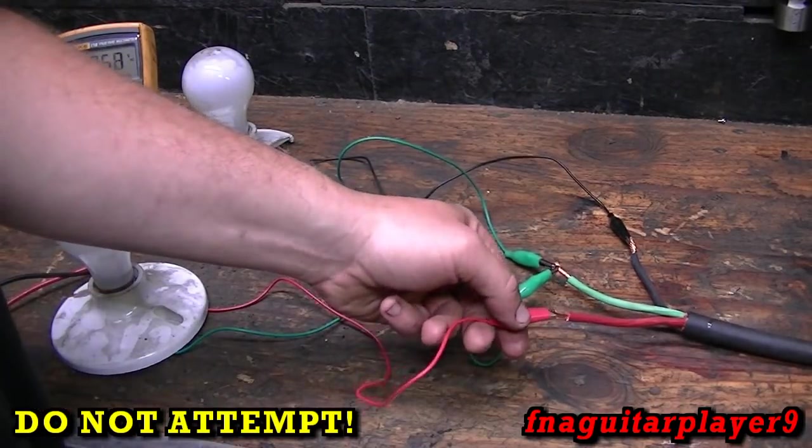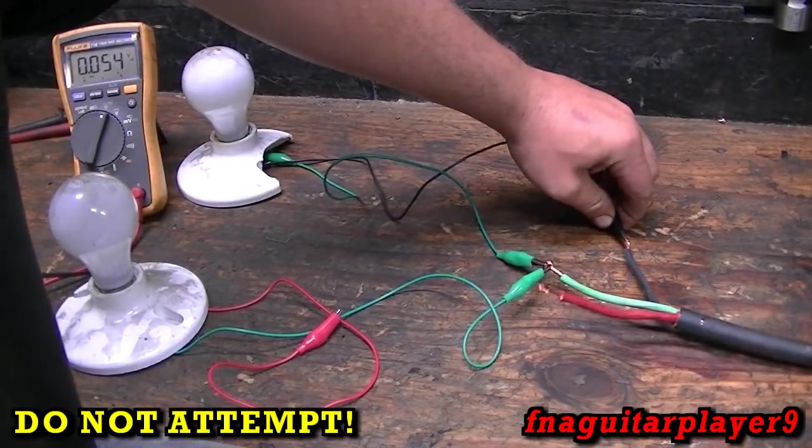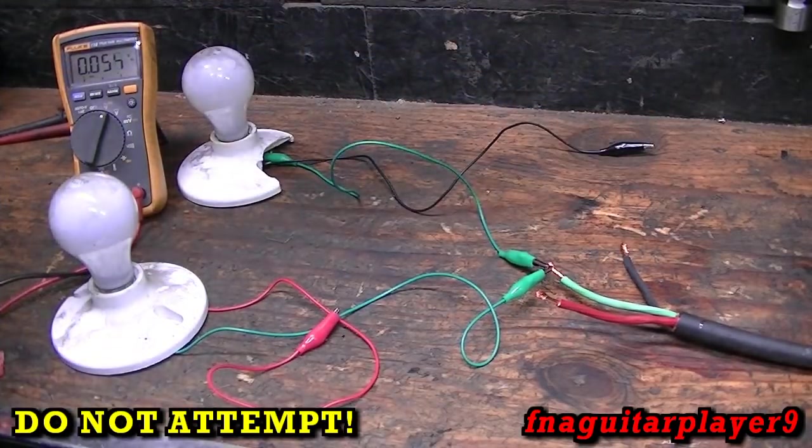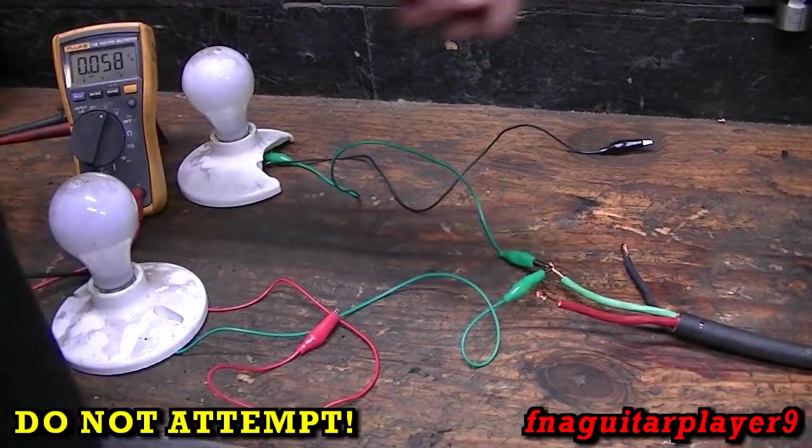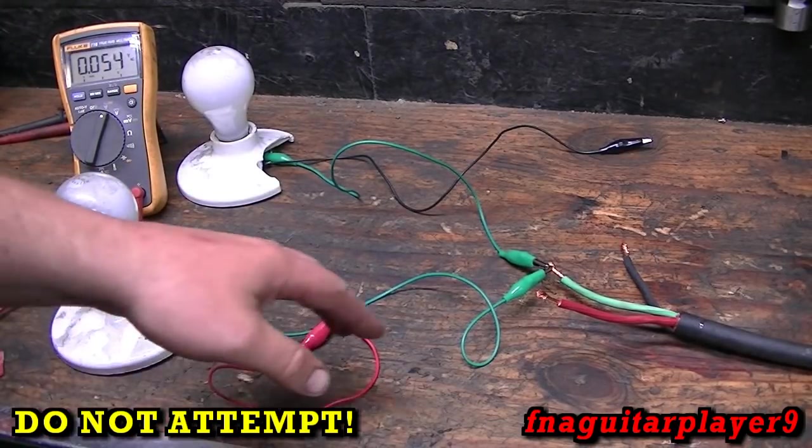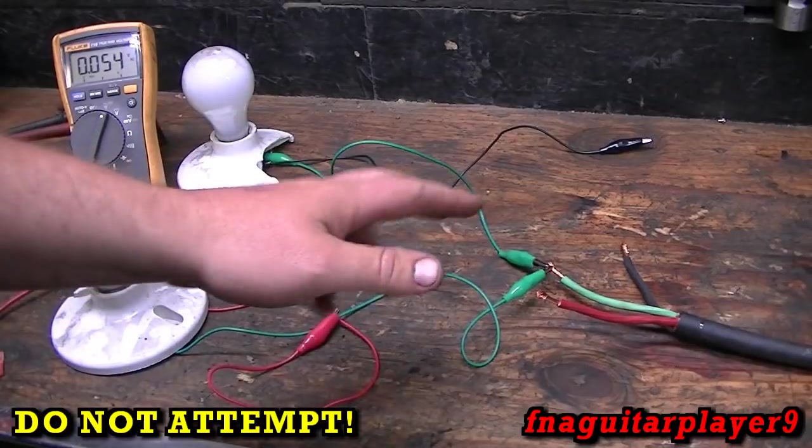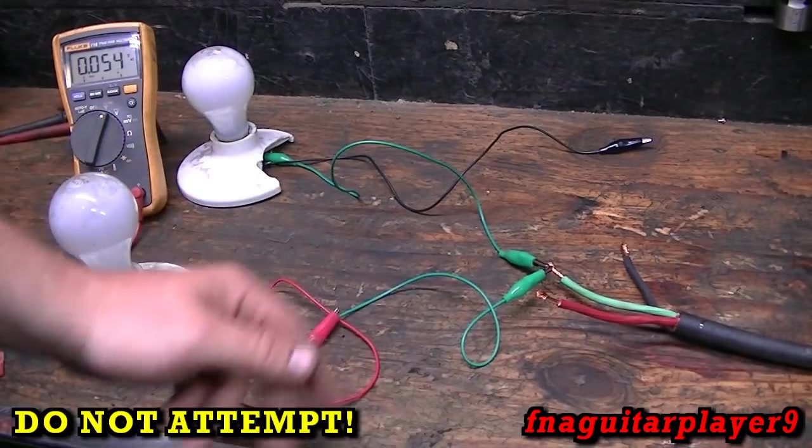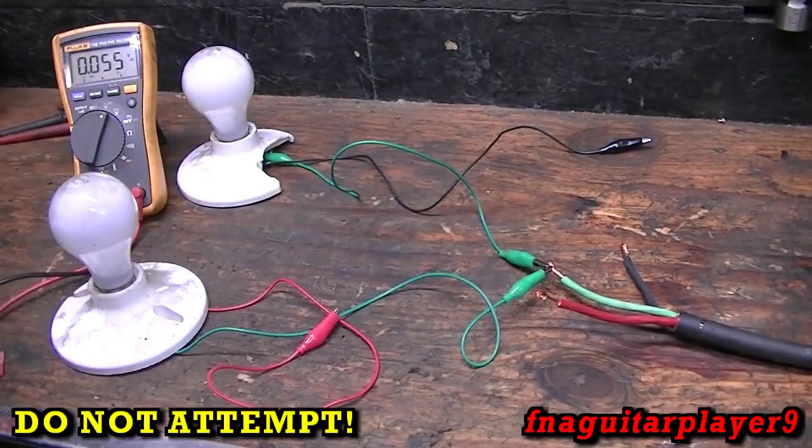The way 220 works is it's actually two 120 circuits split but out of phase with each other. Before I go any further, as you've seen on the intro of the video, you don't want to do this yourself. This is just for demonstration purposes; it's easy to get shocked or electrocuted doing this.